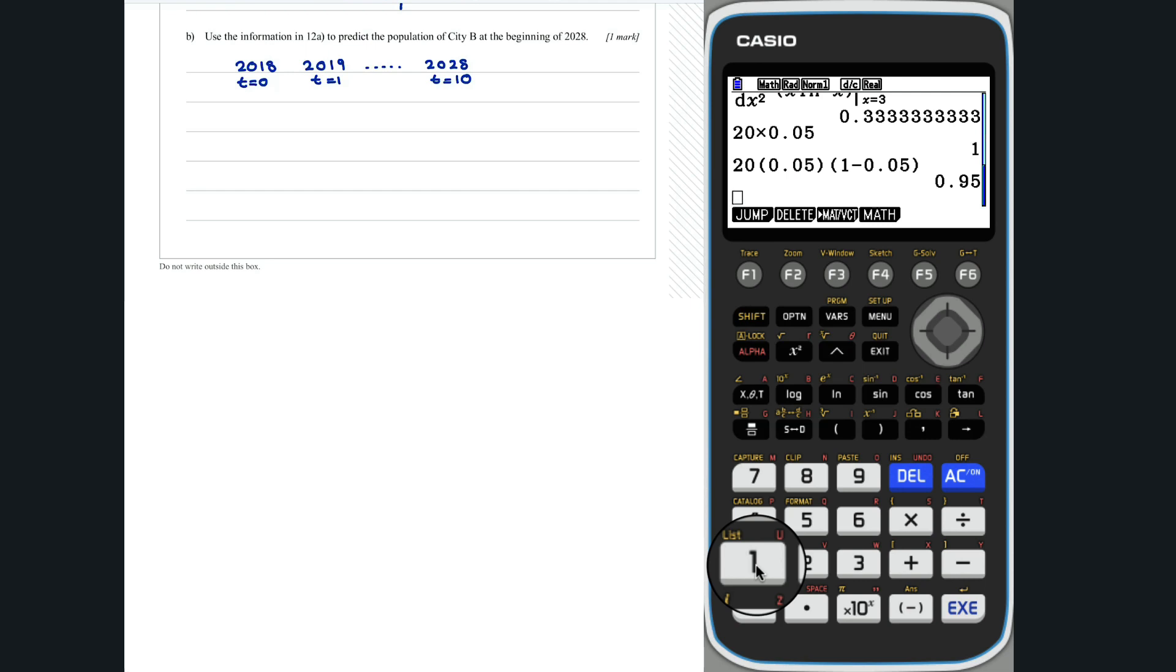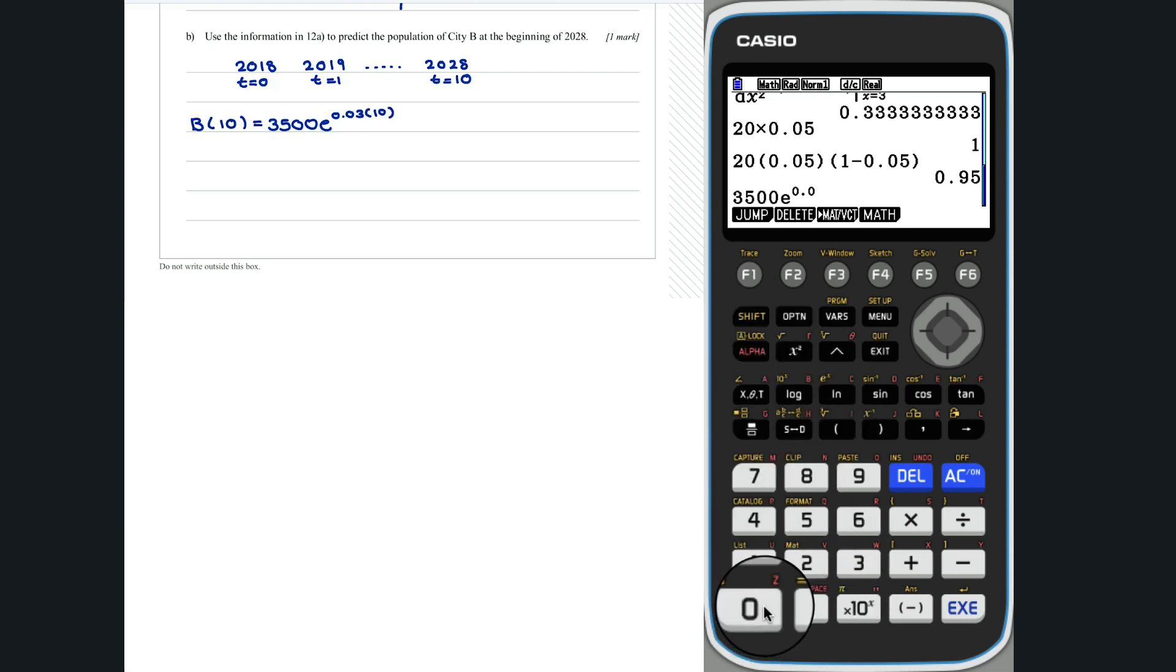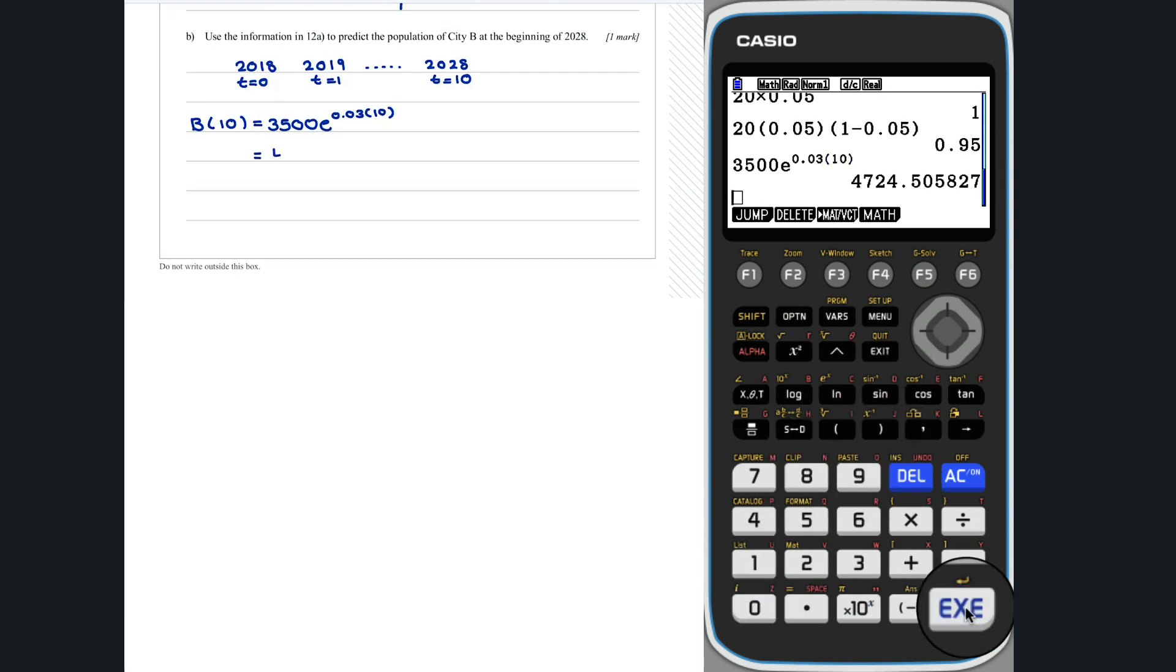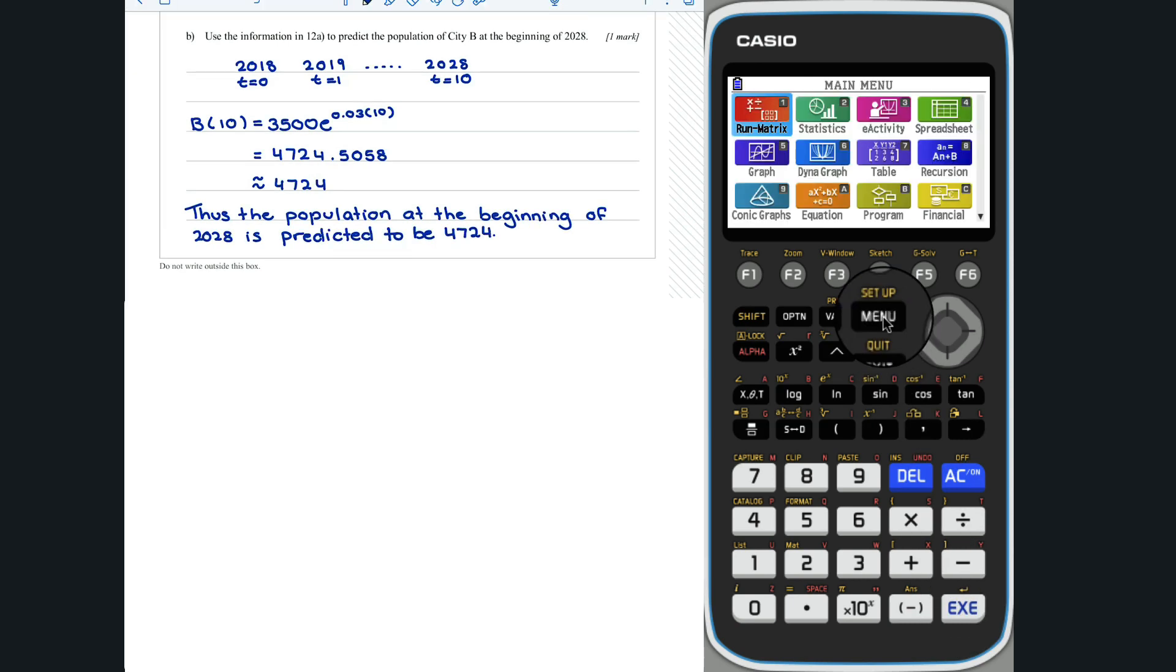Thus, we can evaluate the population of city b at t equals 10. Thus, the population at the beginning of 2028 is predicted to be 4724.